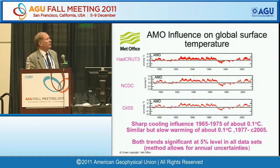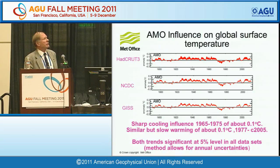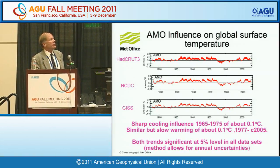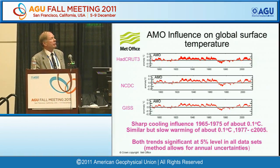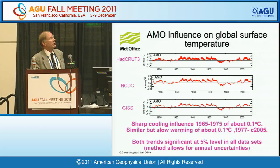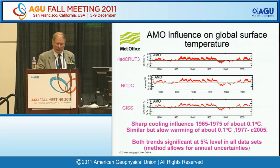This is the AMO from HADCREW T3, the NCDC data set, and the NASA GIS data set. You can see the effect of the AMO on global surface temperature — and there is an effect. This is highly statistically significant. If you do regression fits to the falling and rising regions using a technique that accounts for uncertainties, these are highly significant. So it looks as if the AMO played a role in the cessation or even reversal of warming in the middle part of the century — not just aerosols.